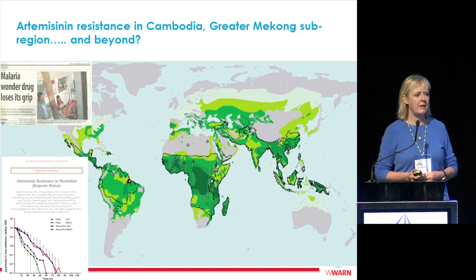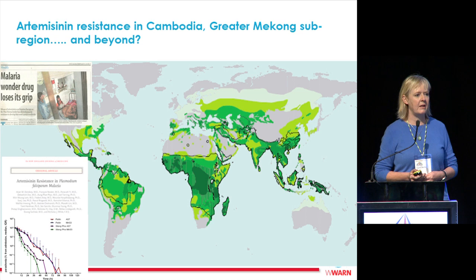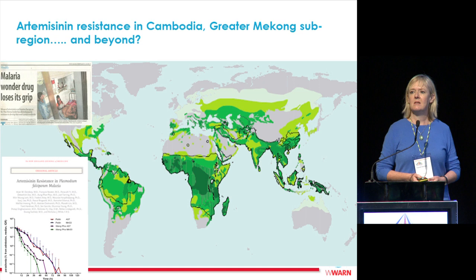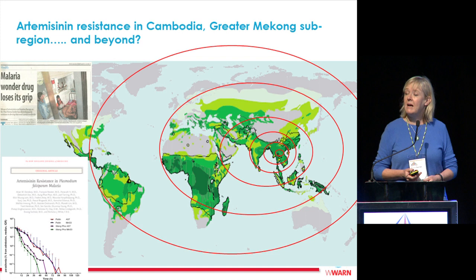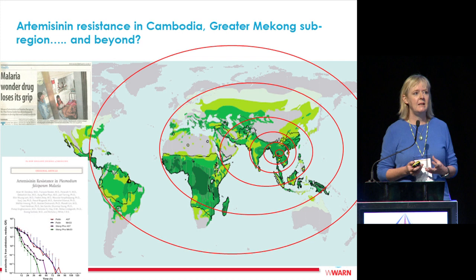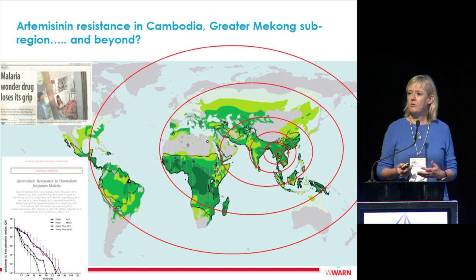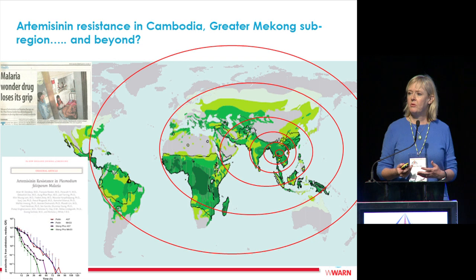WARN was conceived around 2004 and received its first grant in 2007 — exactly when artemisinin resistance raised its ugly head in Cambodia, the epicenter of antimalarial drug resistance. The resistance has since spread across Southeast Asia to six countries: Thailand, Myanmar, Laos, China, Vietnam. There are real fears this resistance will continue to spread, with isolated reports from across Africa. It's critical we have a platform where people can quickly know which drugs are working, which are not, and how to deal with that.